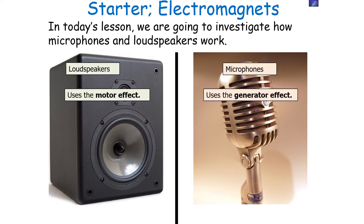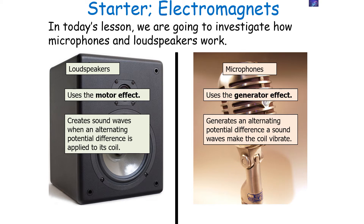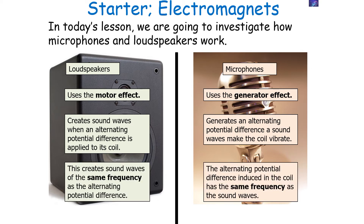The loudspeaker uses the motor effect to work, whilst the microphone uses the generator effect to work. Loudspeakers create sound waves when an alternating potential difference is applied to its coil, whilst the microphone generates an alternating potential difference when a sound wave makes the coil vibrate. The loudspeaker creates sound waves of the same frequency as the alternating potential difference, whilst the microphone induces an alternating potential difference at the same frequency as the sound wave that hits it.